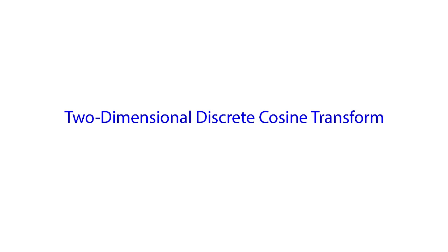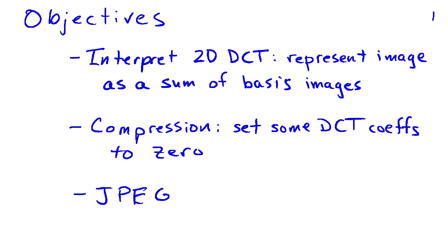The two-dimensional discrete cosine transform is a commonly used tool for compressing images. Our objectives in this video are to interpret the 2D discrete cosine transform as a representation for an image in terms of a weighted sum of basis images.